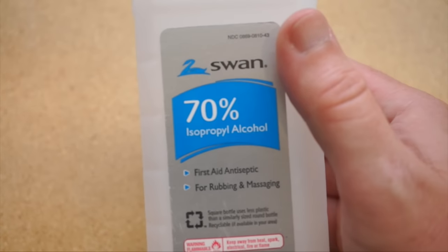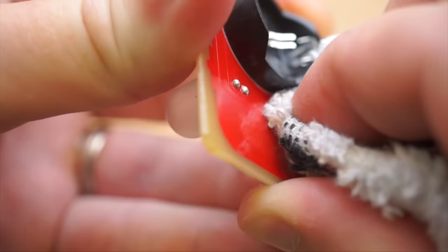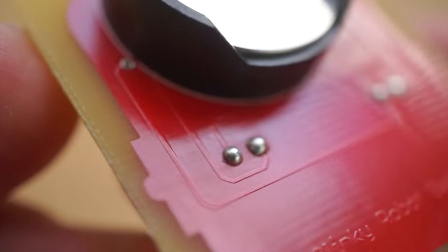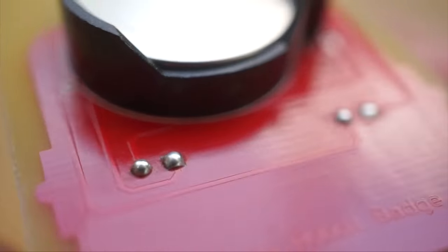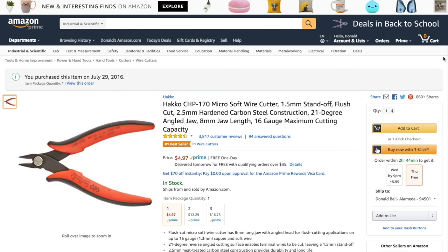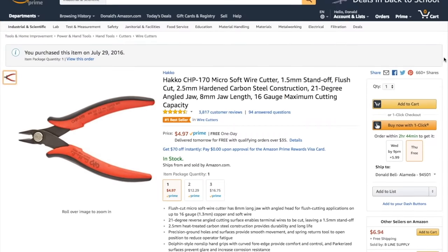You can clean up the extra flux with a swab of isopropyl alcohol and you've got a board worth showing off. You don't need any special soldering iron or solder to make this technique work, but you really do need the flush cutters to get up right against the board. I've got a link to these exact ones in the description.